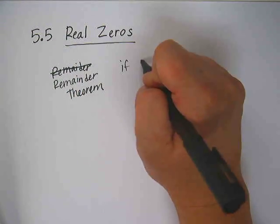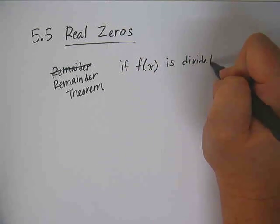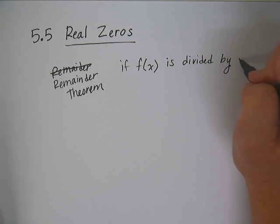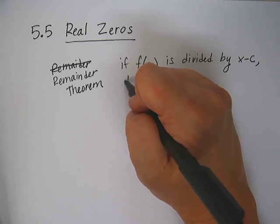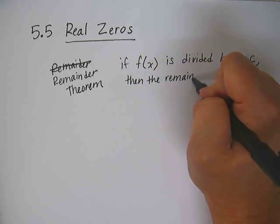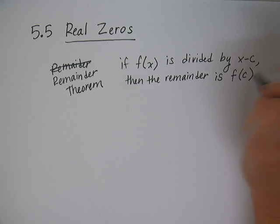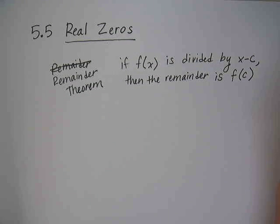Okay, it says if f of x is divided by x minus c, then the remainder is the function, the value of the function at the x value c. So there are two different ways to find a remainder. One way to find a remainder is by using synthetic division. Another way of finding a remainder is to plug the number in that you're dividing by.